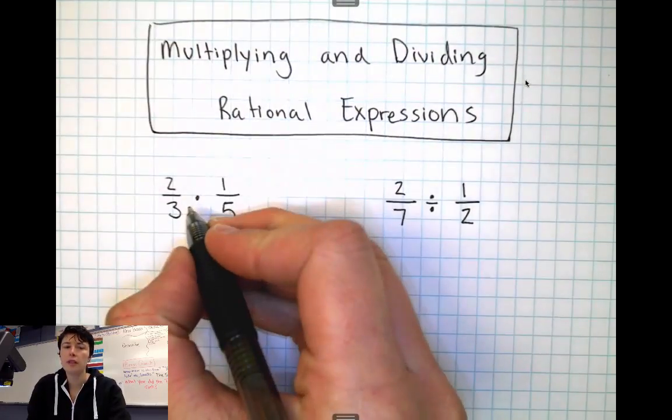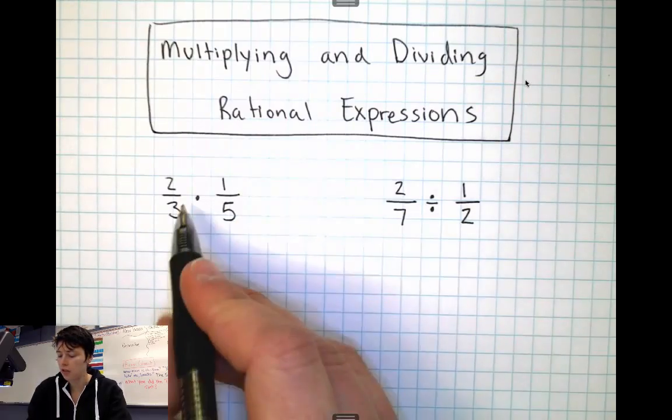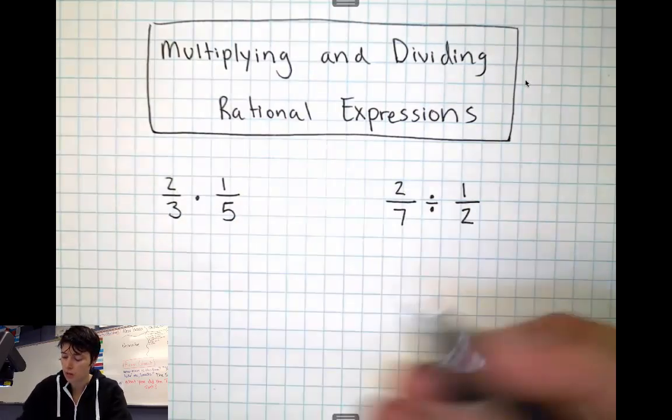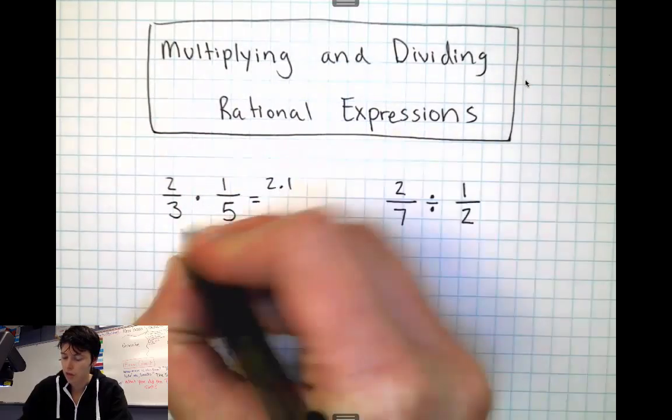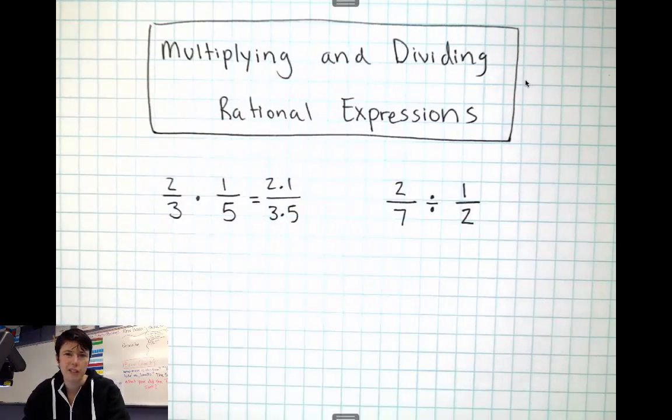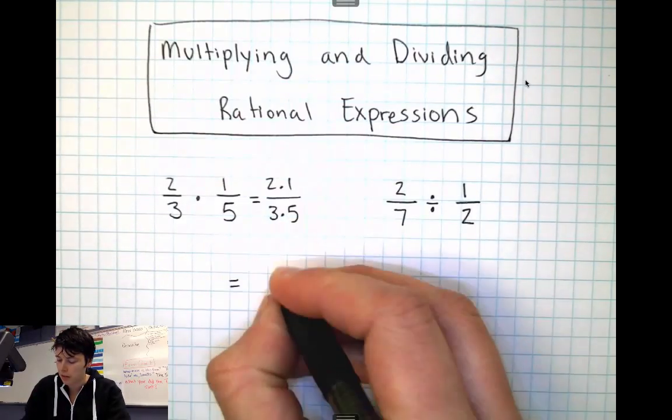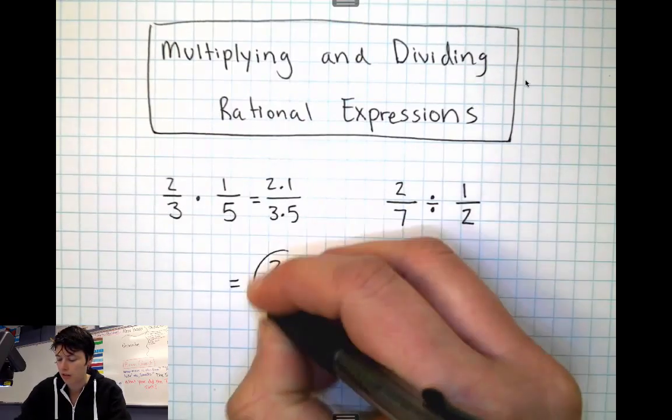Multiplying is very simple. Literally, you just multiply straight across. So when you see like 2/3 times 1/5, all you have to do is 2 times 1, and 3 times 5. That's pretty easy math, so 2 times 1 is 2, 3 times 5 is 15, and we get 2/15 as an answer.